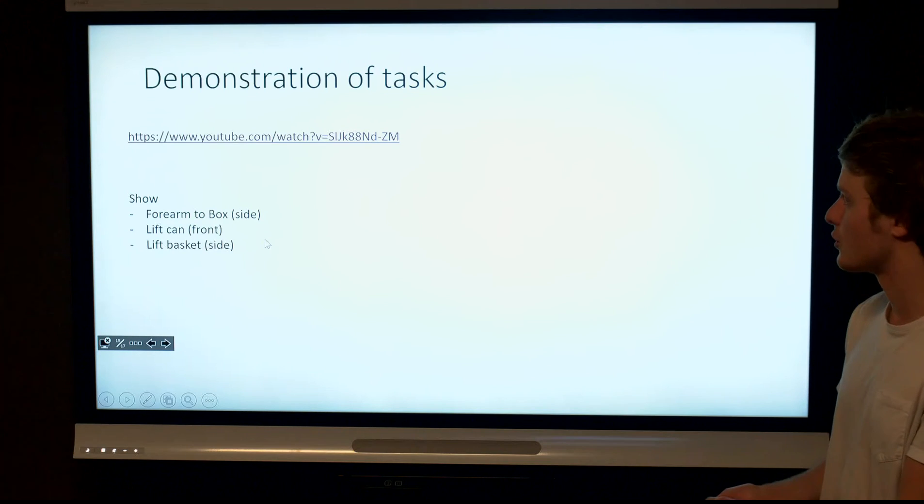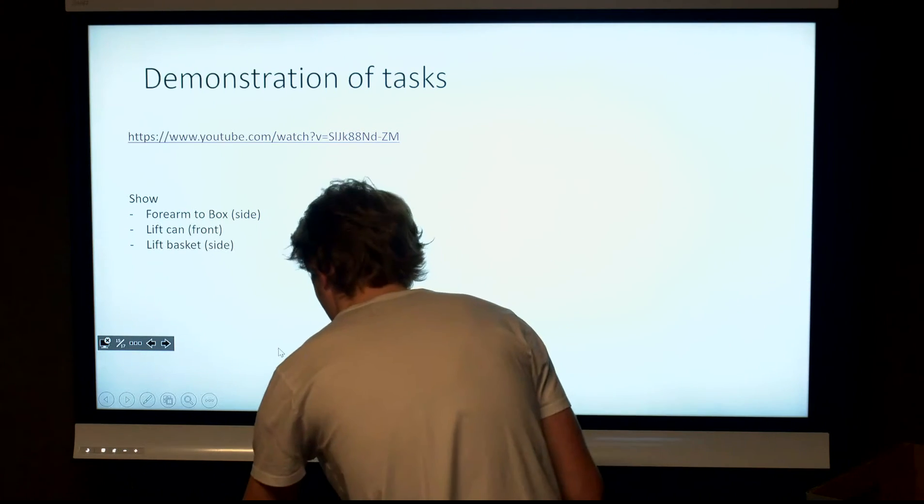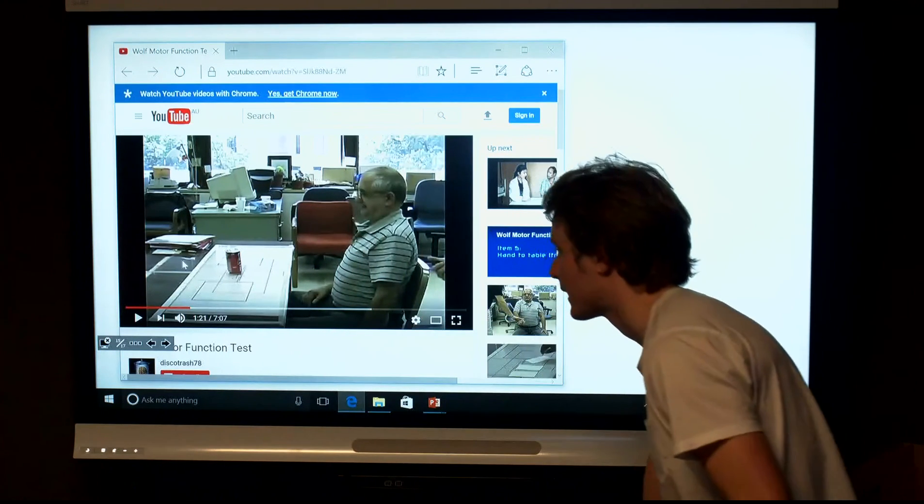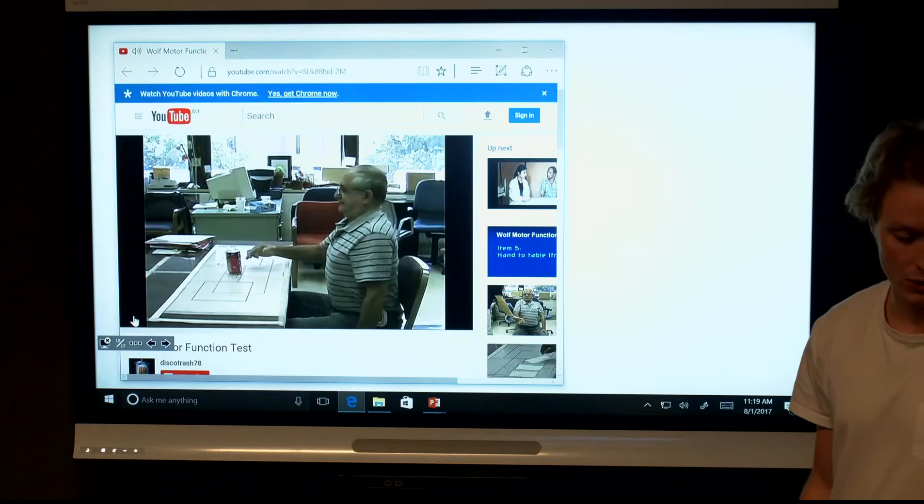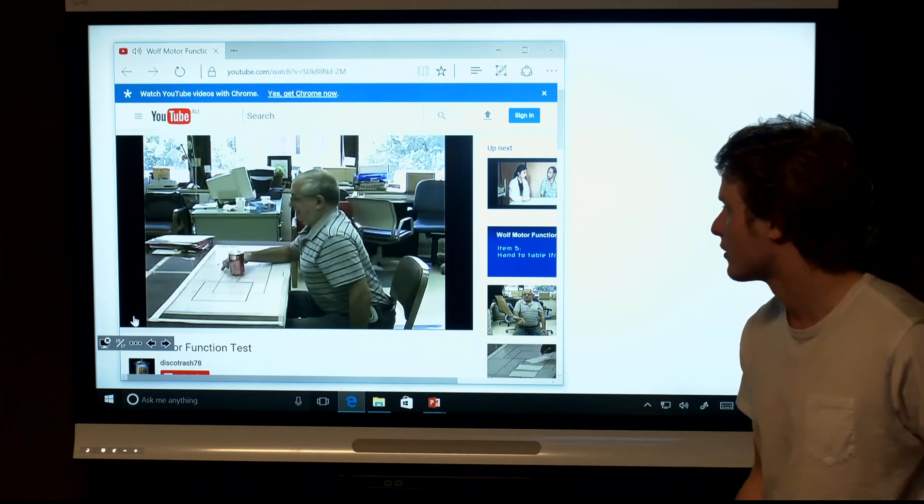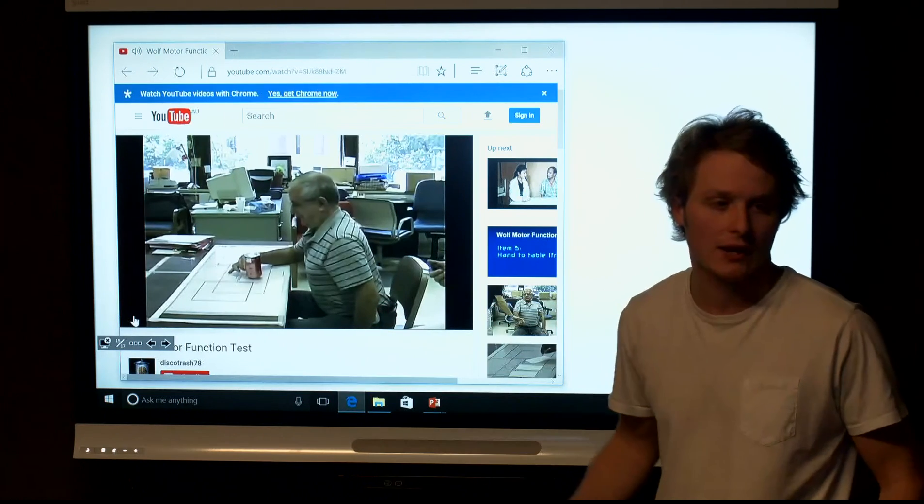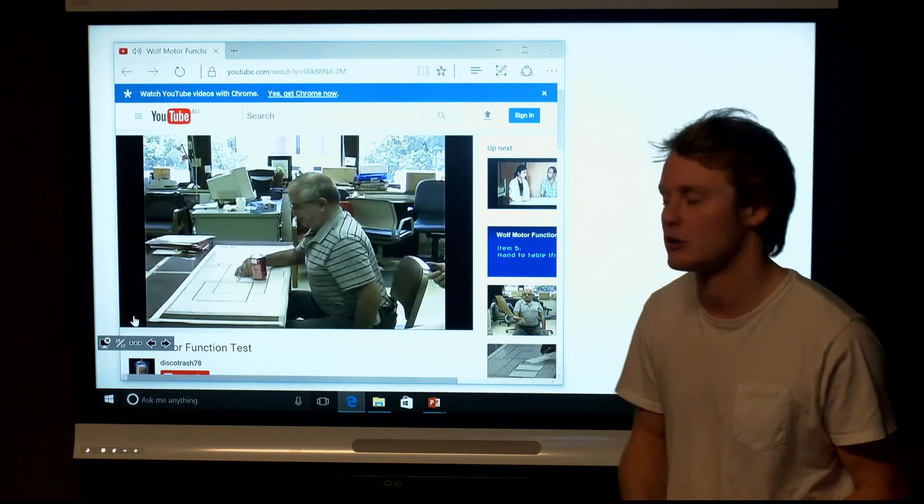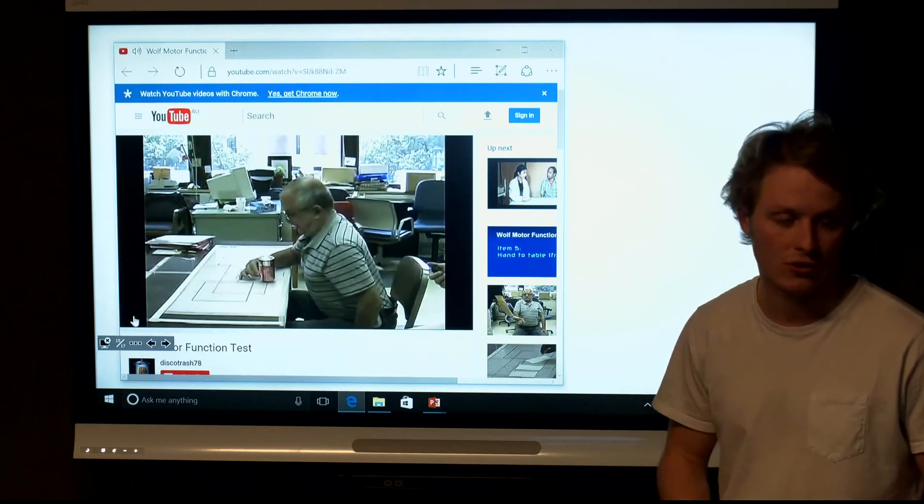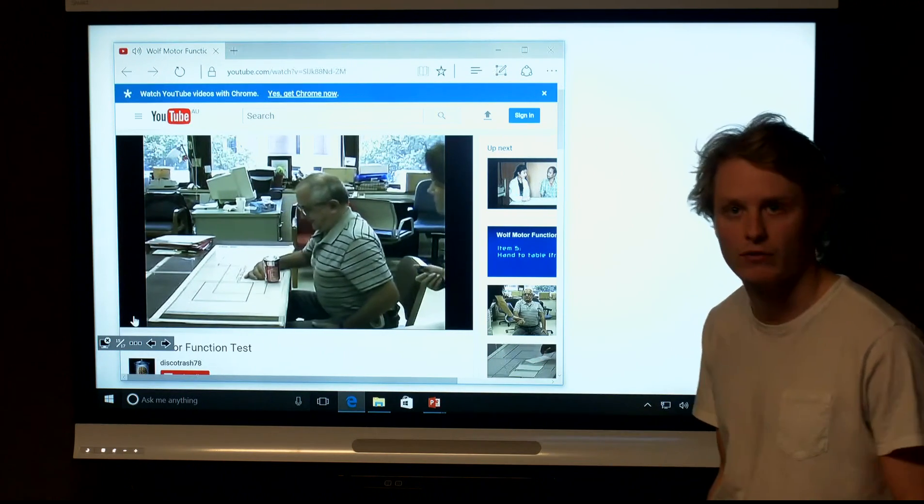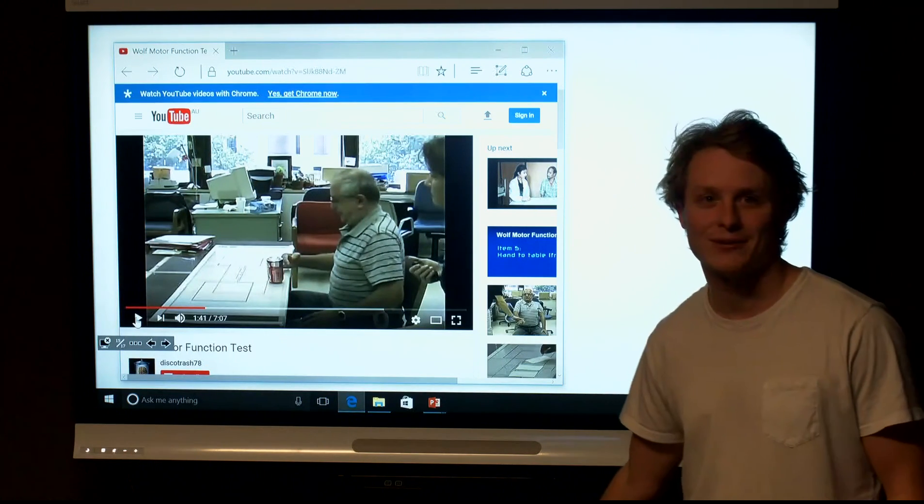The last thing I wanted to show was a simple demonstration of one of the tasks, which is lifting a can, and this is one that requires compensation. Now the key thing to watch here is the degree to which the head and trunk are moved when the client moves, and there's not a full reach of extension there with the elbow, and he has to compensate with the trunk. This is exactly the type of thing we're looking for and trying to prevent. Thank you very much for listening.